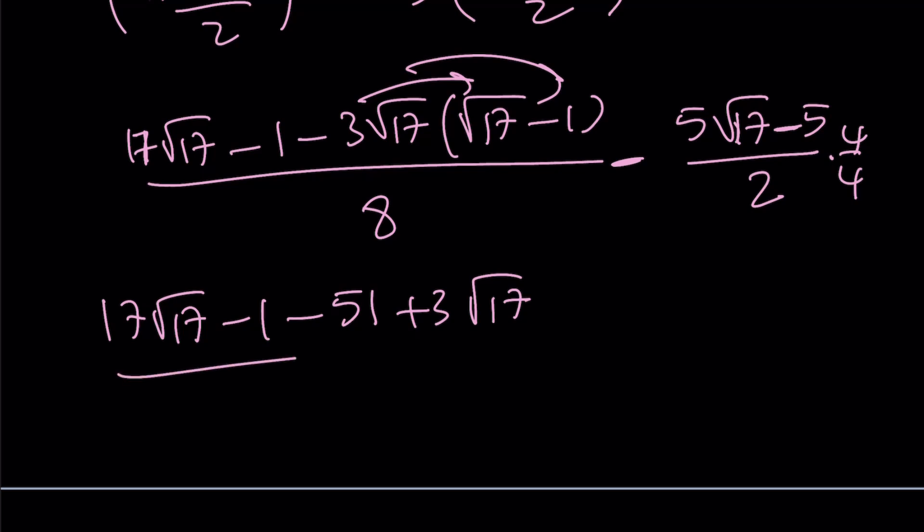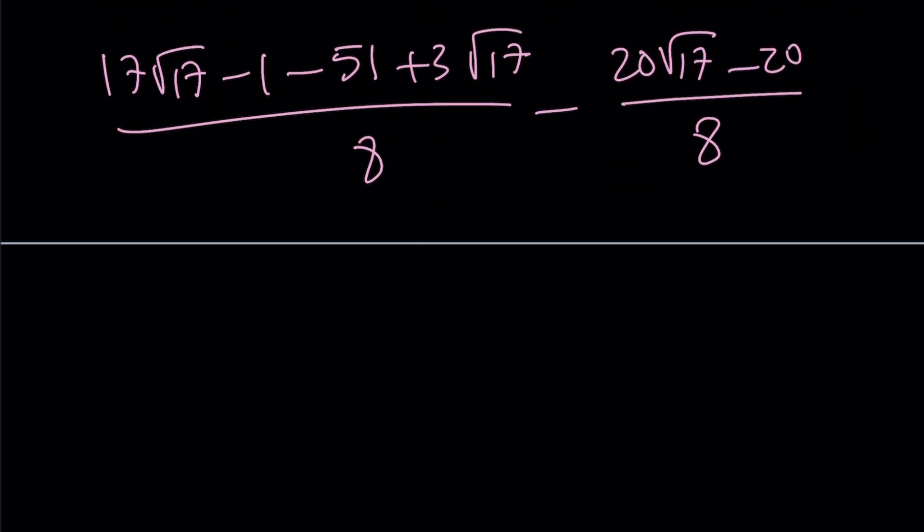Actually, let's go ahead and do the following. Let's first write it this way because I haven't multiplied by 4 yet. Let me do it. And then we'll just subtract the numerators. Let's go ahead and subtract the numerators. But this plus this becomes 20 root 17. Negative 1 minus 51 is going to be negative 52. And now we're going to subtract 20 root 17.